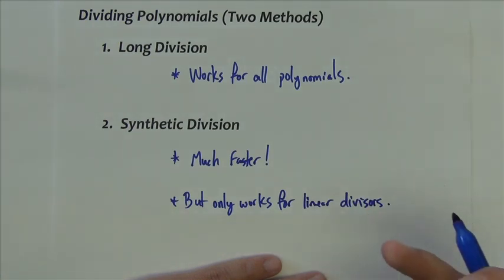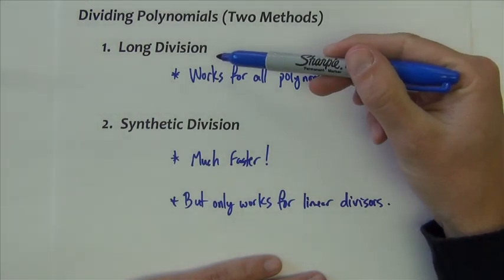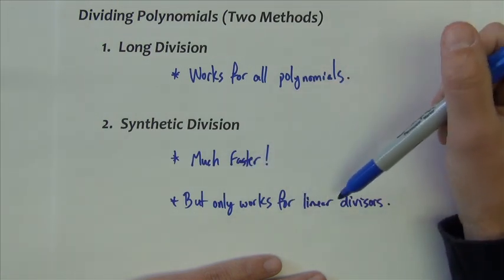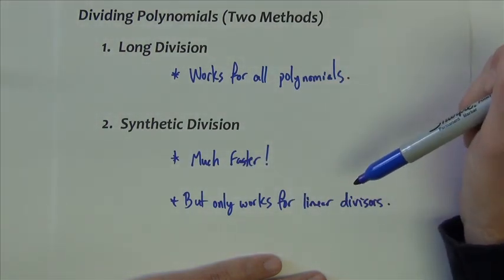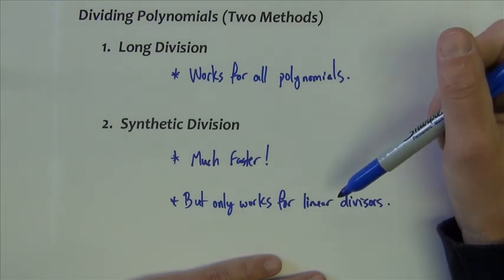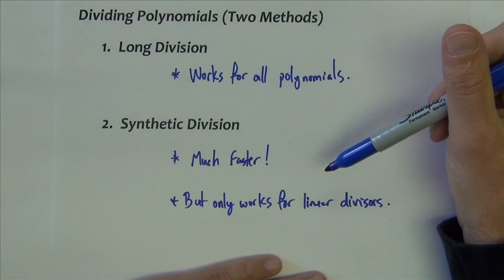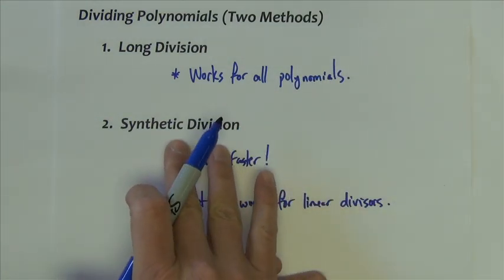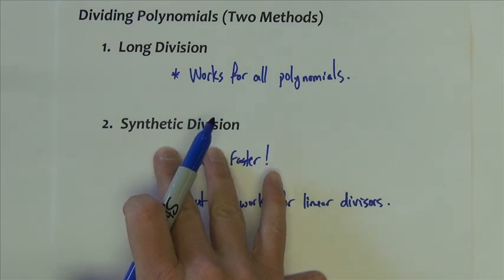It'd be great if the shortcut worked for everything, because then we'd never have to do this up here. But unfortunately, the shortcut only works if we're dividing by linear polynomials. Now the nice thing about where we're going today, as far as finding rational zeros, we're pretty much only going to be dividing by linear divisors. So we're going to be able to stick with the shortcut technique for pretty much everything that we do today.